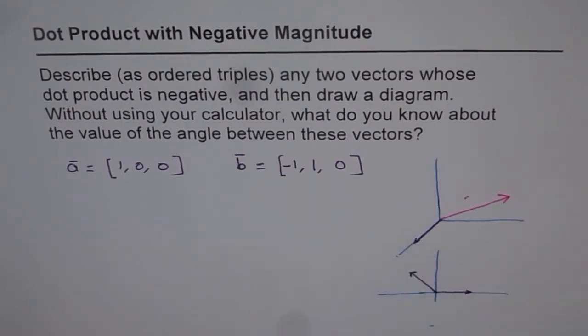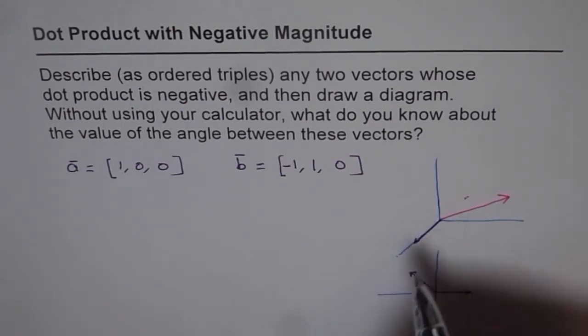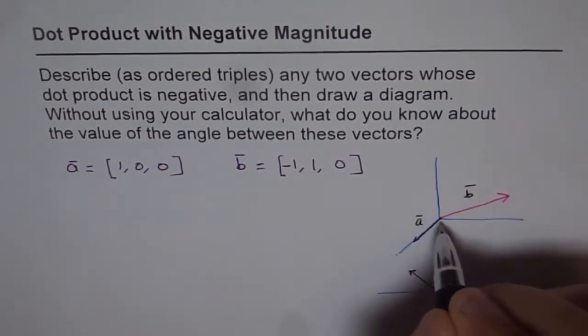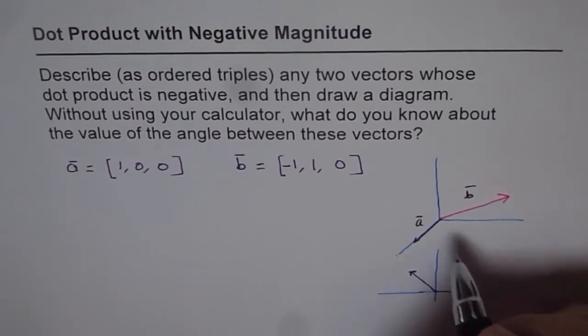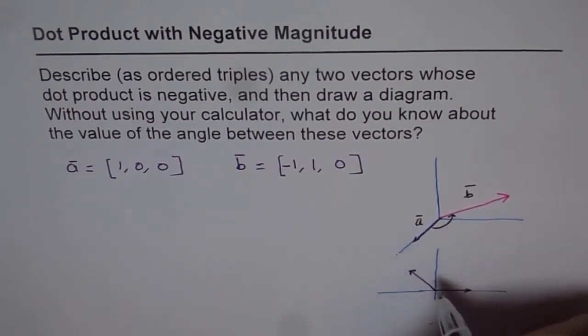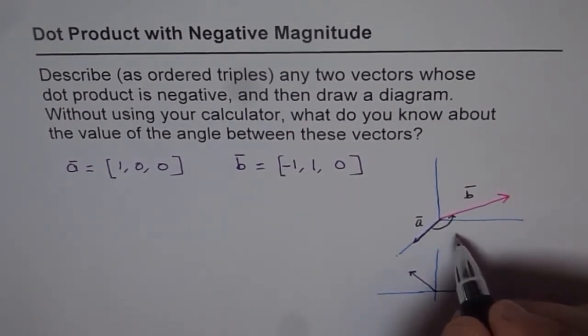So one is vector a, which is along the x-axis. I've taken as a unit vector. And the other one is vector b, which is right there. And the angle between the two, as you can see now, is more than 90 degrees. Now since the angle is more than 90 degrees, the dot product is going to be negative.